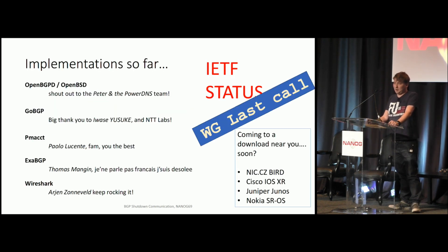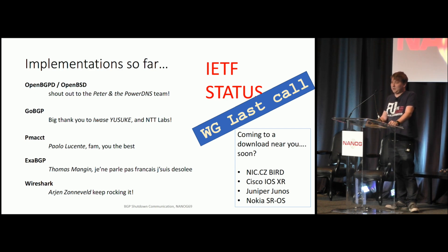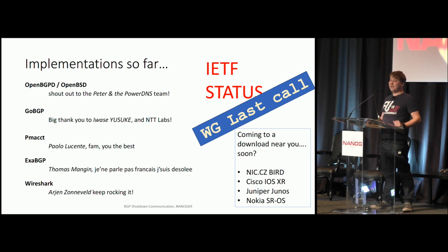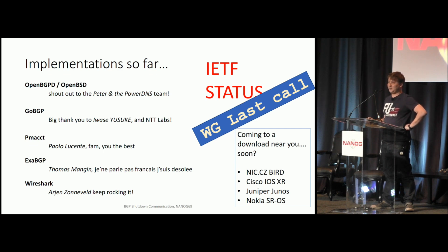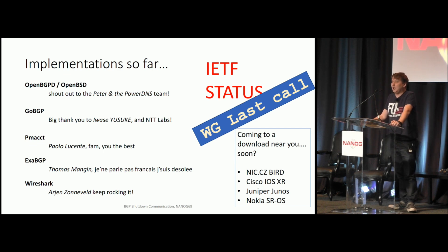The IETF still has that attitude of 'put your code where your mouth is,' and then you can progress things through the IETF much easier than if you have nothing to show for it. OpenBSD has this implemented, GoBGP, pmacct the traffic analysis engine, and ExaBGP have it. There are decoders for Wireshark and tcpdump available for protocol designers to debug this extension. I've heard positive feedback from BIRD, a famous route server application. Cisco IOS XR, Juniper, and Nokia have also shown interest.